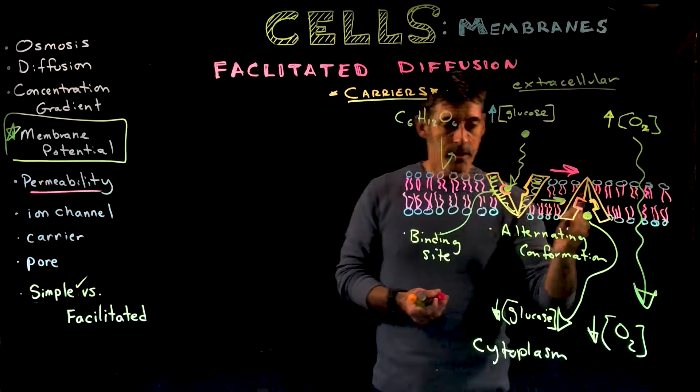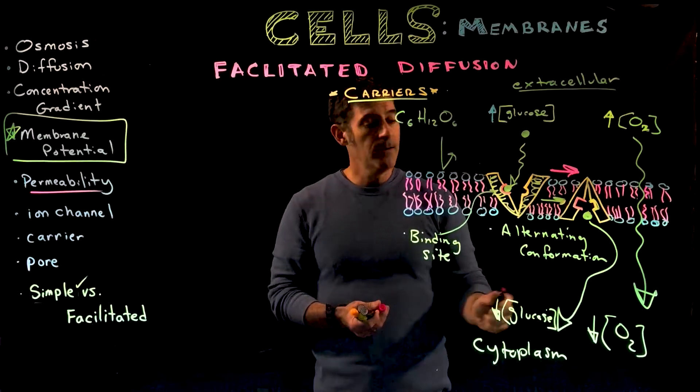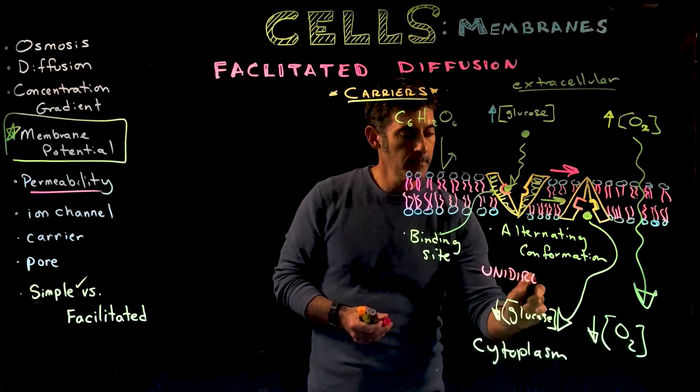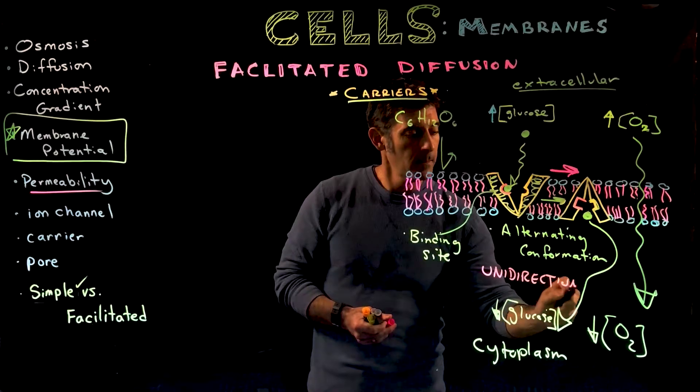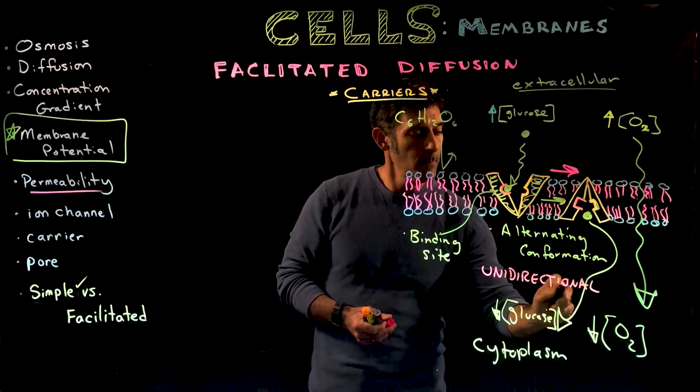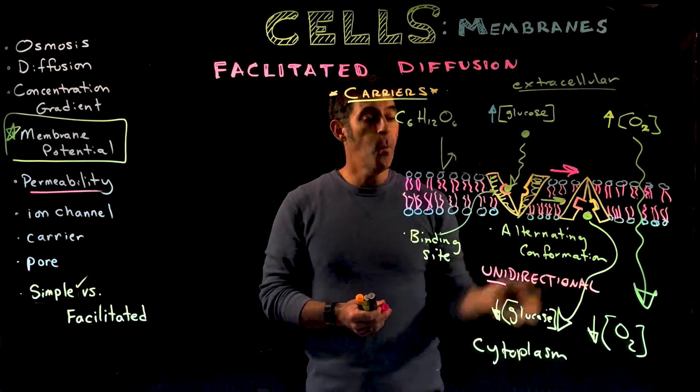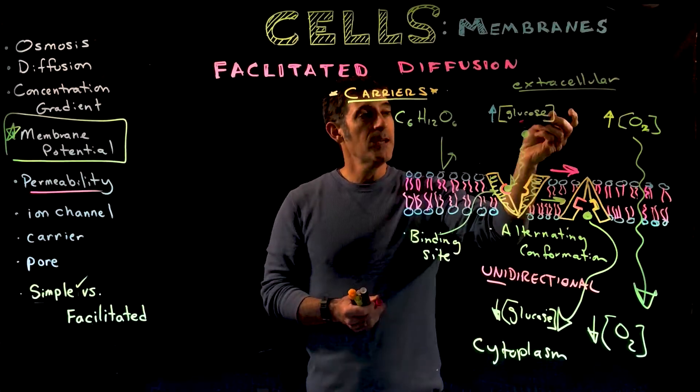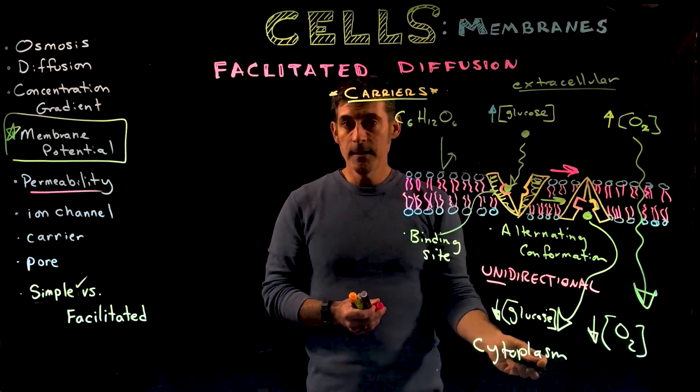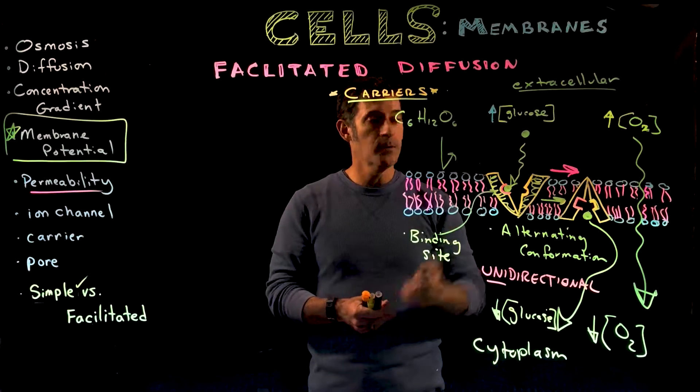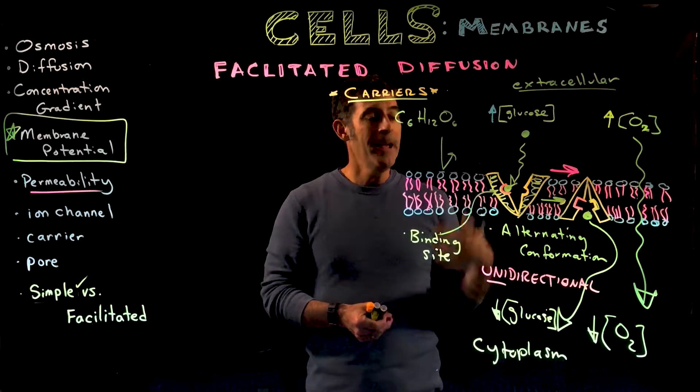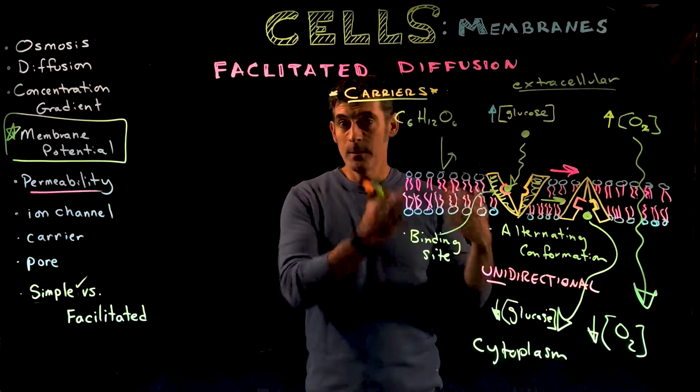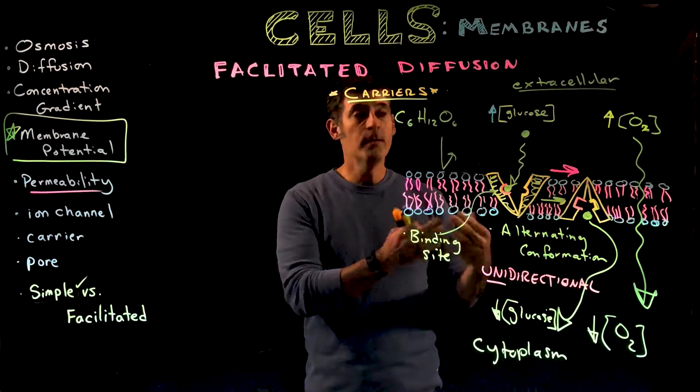This is important because these carriers are unidirectional. They allow molecules to move in only one direction—uni, one direction. In this case, from outside to inside the cell. It's still diffusion, always moving from high to low concentration, and that unidirectional movement could be in or out, but it would always and only move in that one direction.